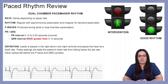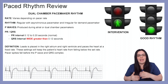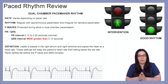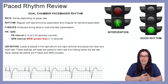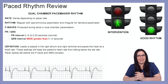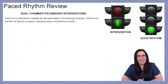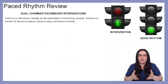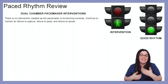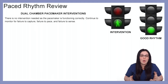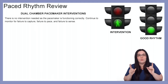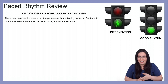These settings will keep the patient's heart from falling below that set rate, and pacer spikes will fall before the P wave and before the QRS complex. Interventions are not really necessary with our dual chamber pacemakers unless it is not functioning appropriately. We are now going to move on to discuss what failure to capture, failure to pace, and failure to sense looks like.